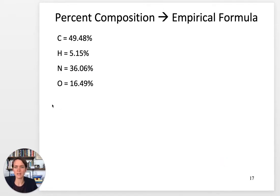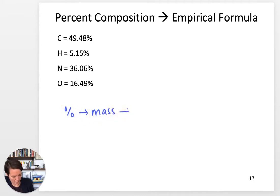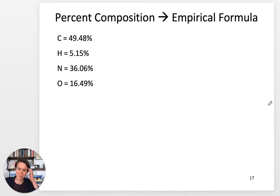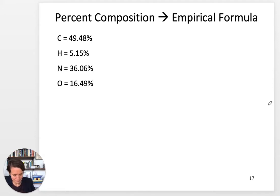In the last lecture I talked about this problem-solving flow where we go from percent to mass, mass to mole, then you divide by least and you multiply until whole. The example in the first lecture included this sequence but we didn't have 'multiply until whole,' and I feel like it just kind of got lost. So I wanted to give you an overview of what that can look like — and this will definitely be on your quiz or exam.